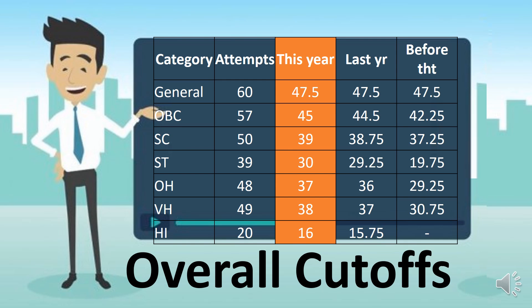For the overall cutoff, you have to attempt minimum 47.5 marks to clear the cutoff, and the total attempt has to be 60. So general category students overall have to score 60 marks in attempts to clear the cutoffs.